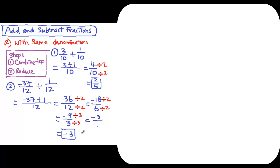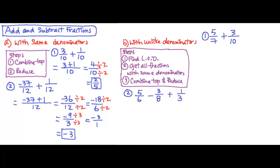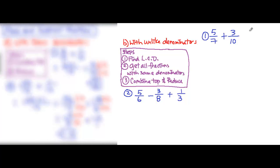For the denominator, we have 7 and 10. They are relatively prime numbers, so hopefully a lot of you can see this is going to be 70 for the lowest common denominator. So the LCD is 70.